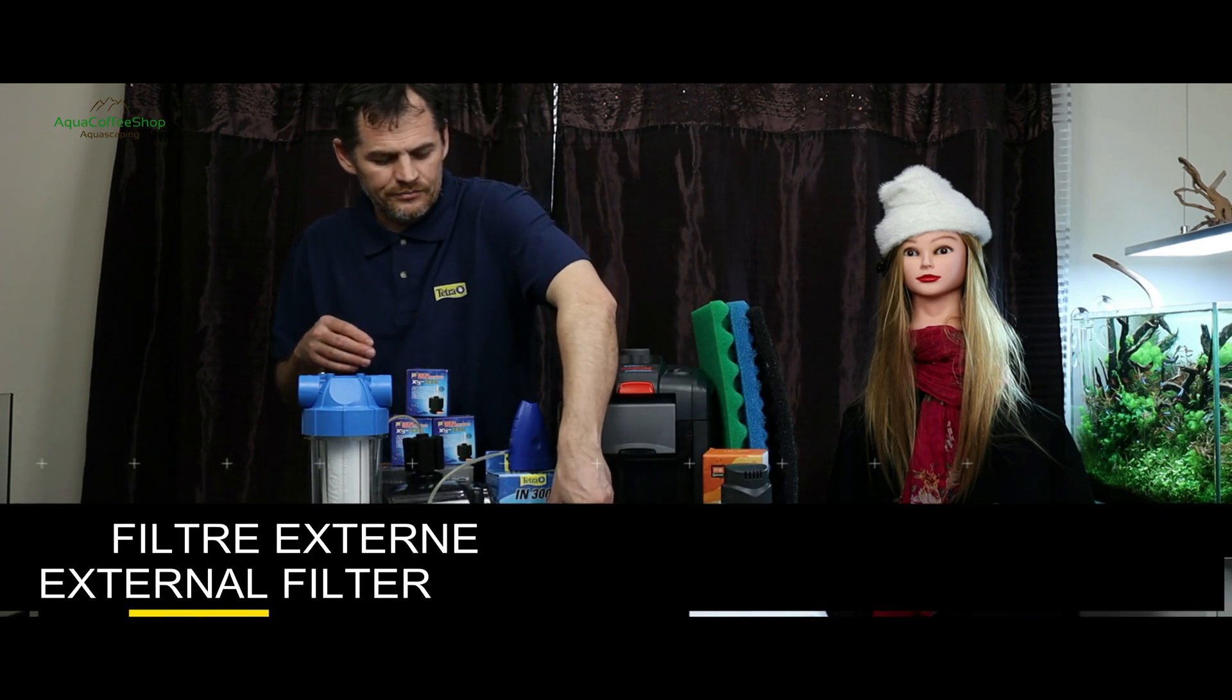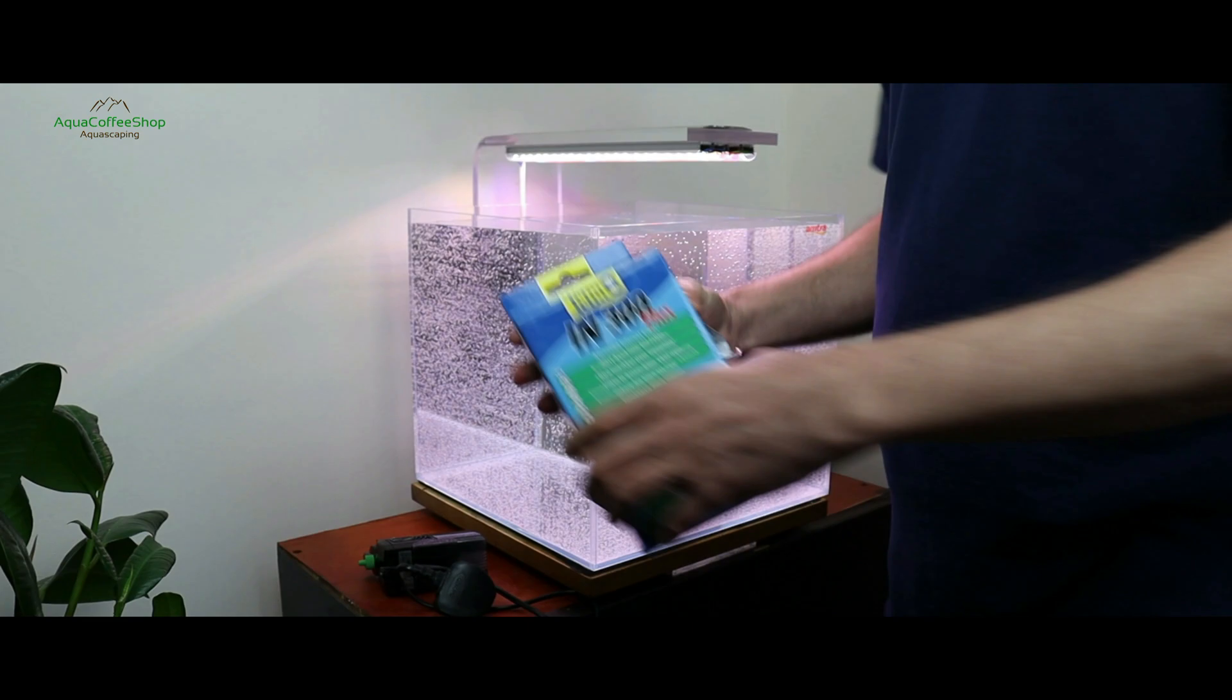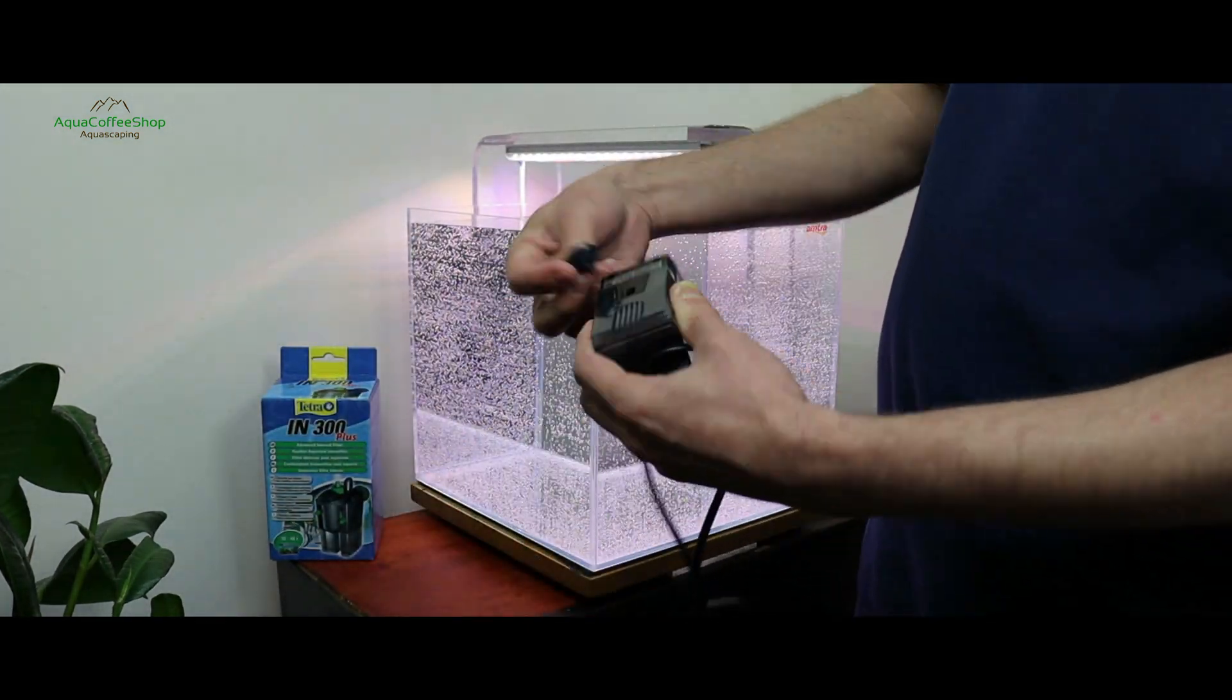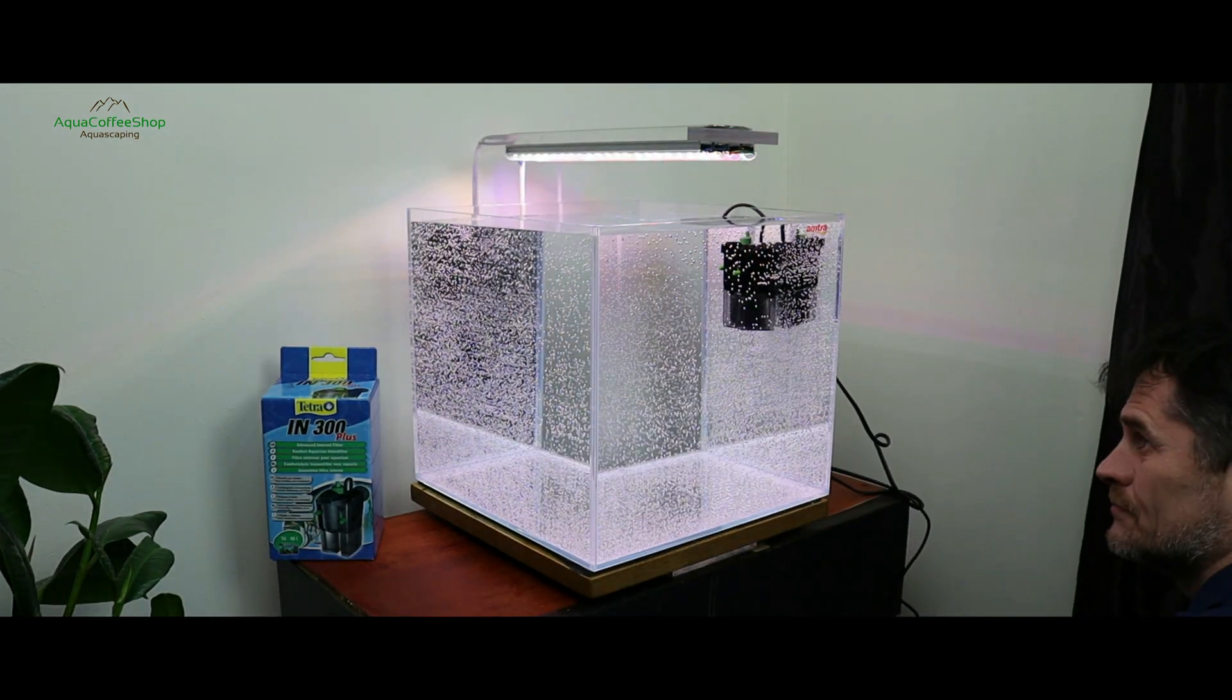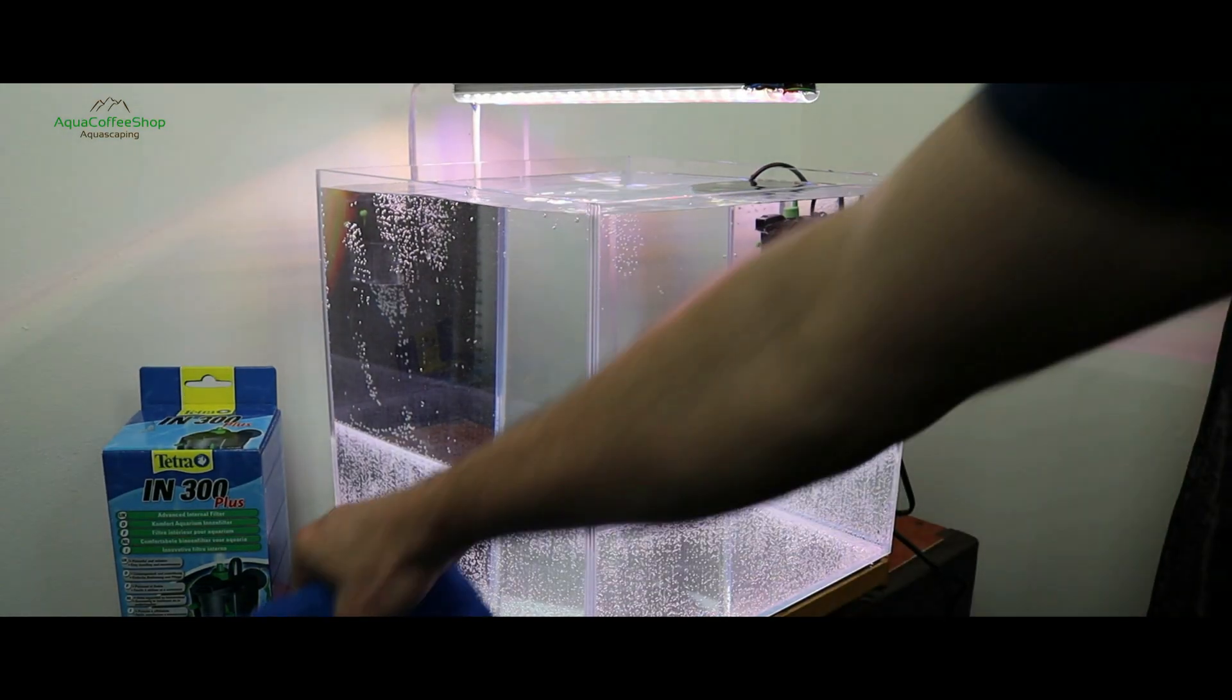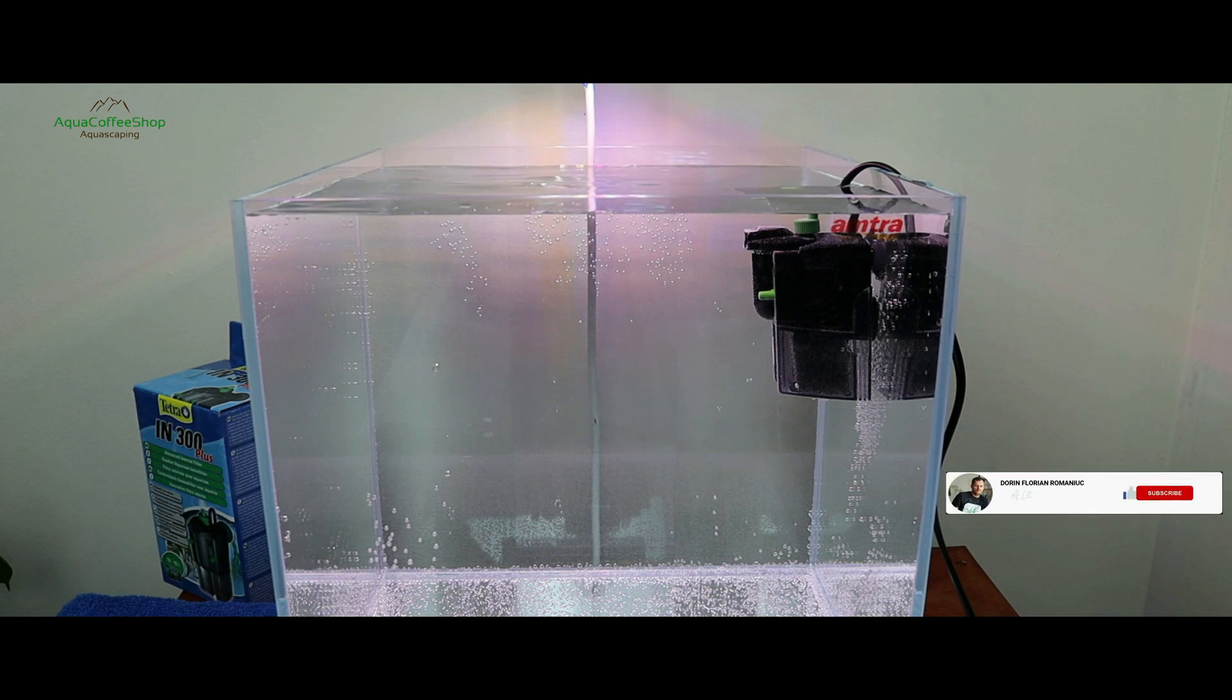Internal filters, also called corner filters, were the first filters used in aquaristics. Being much less used than in the past, these are very cheap and can be loaded with a variety of filter media, but insufficient for large aquariums. Internal filters are compact, stick inside the glass in the aquarium, being useful for aquariums of 30 liters or smaller.